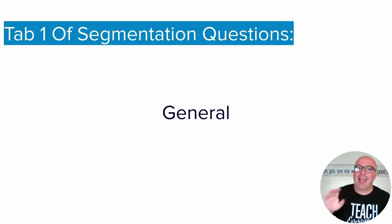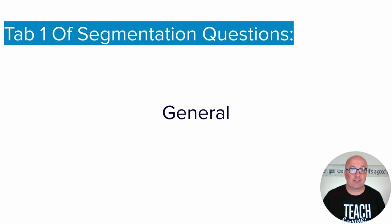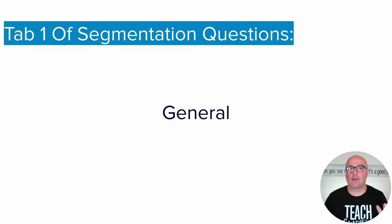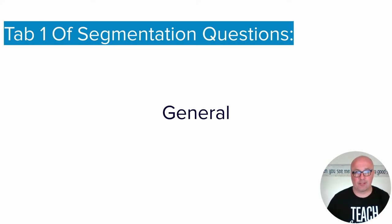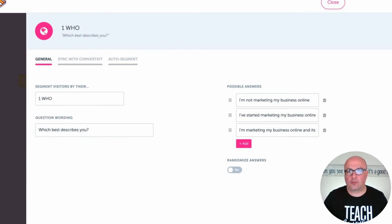Now, when you're actually modifying, managing, or editing any of your questions — whether you have them already set up or you're setting one up for the first time — there are three tabs. But in the 101 version, we're going to cover the first two. The very first one is the General tab, and you can see there are only about four different decisions that you make on this tab.